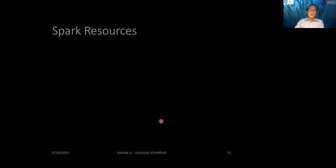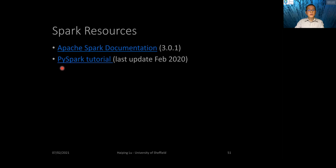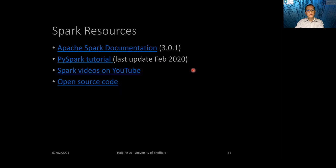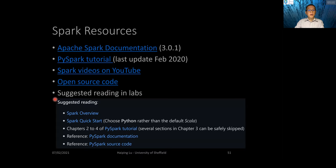Because Spark is open source, you can find many open resources. The first thing to consult is the official Spark documentation. There is also a good tutorial, though it hasn't been updated for about a year. You can also watch Spark videos on YouTube, look at the Spark source code, and check the suggested readings in the lab. When viewing online documentation, choose Python rather than Scala since we use PySpark.